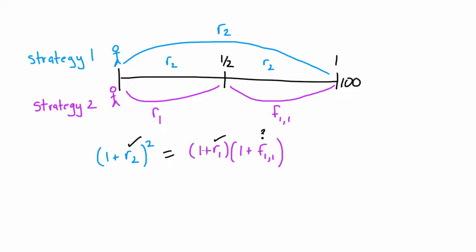This is the basis of expectations theory — the idea that if two strategies have identical levels of risk and identical payoffs, then the rates of return of the two strategies have to be the same. We don't know what the forward rate one period in the future will be, but under expectations theory, this relationship has to hold.